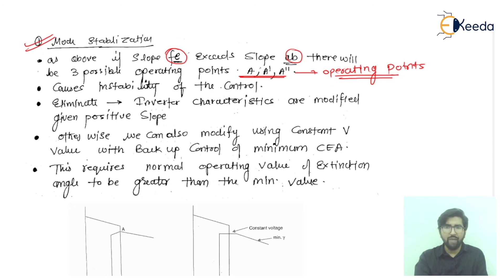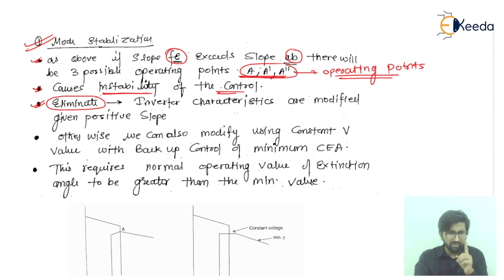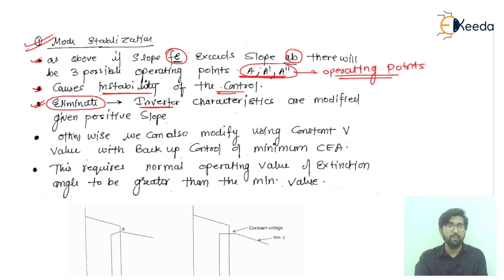These three operating points cause instability in the control. To eliminate this condition, we need only one operating point. To achieve that, the inverter characteristics are modified in such a way that they will have a positive slope.